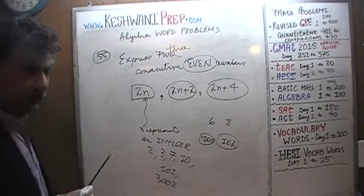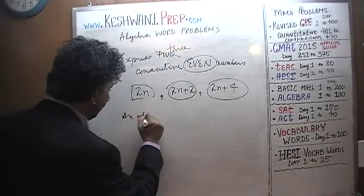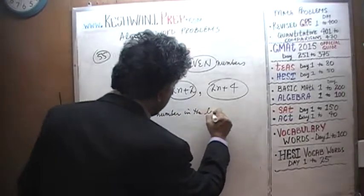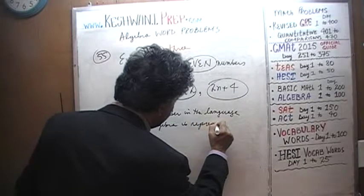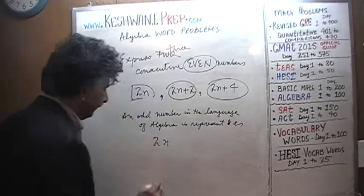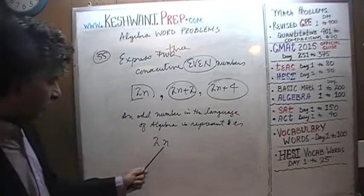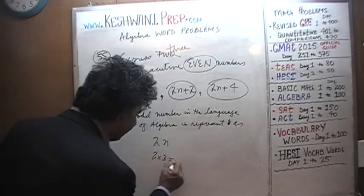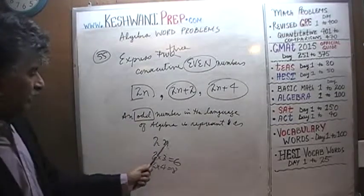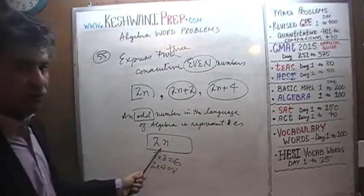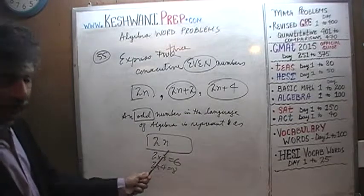How do you represent the notion of an odd number? An odd number in the language of algebra — we do not know what N is; N is just an integer. It could be even or odd. If N turns out to be odd, then 2 times 3 is 6; if N turns out to be even, then 2 times 4 is 8. That's not going to do the job. We want to represent the notion of an odd number — how do we force this quantity to always be odd? By simply adding 1 to it.